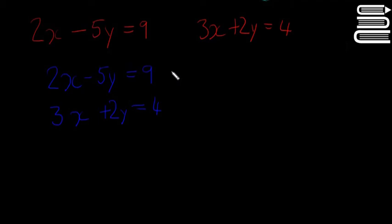So what we're going to do is multiply this one by 2, and this one we're going to multiply by 5. The idea being that if you multiply this by 2, you'll get 10y, and this by 5, you'll get 10y as well. So they'll be the same.